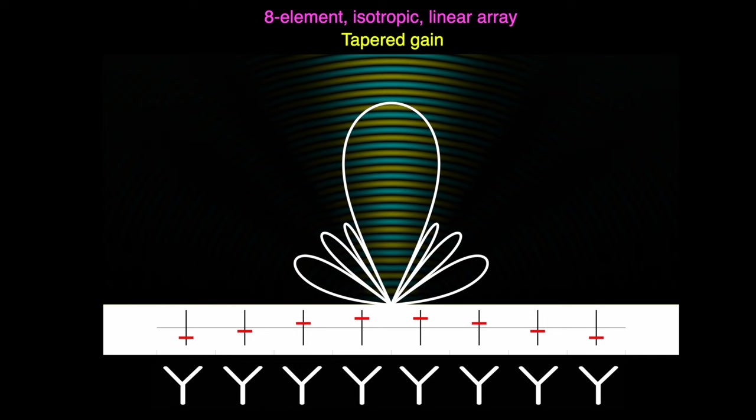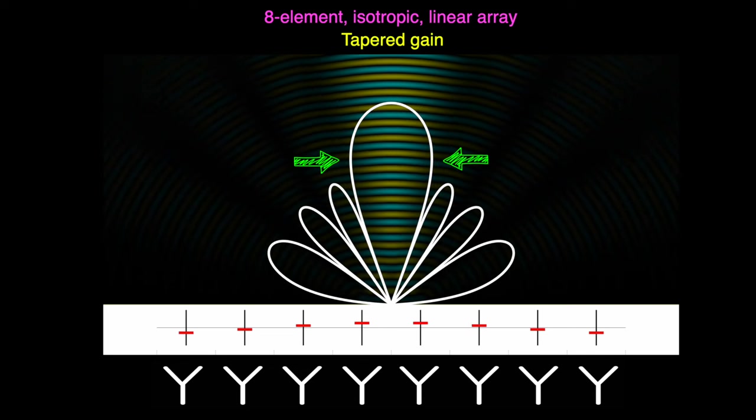And that's the power of adjusting the power to each element. But it has come at a cost. The main lobe is now wider than it was without tapering. And if I cycle back and forth between tapered and uniform gain, you can see that the side lobes shrink and grow, and the main beam is getting a little wider or a little narrower.